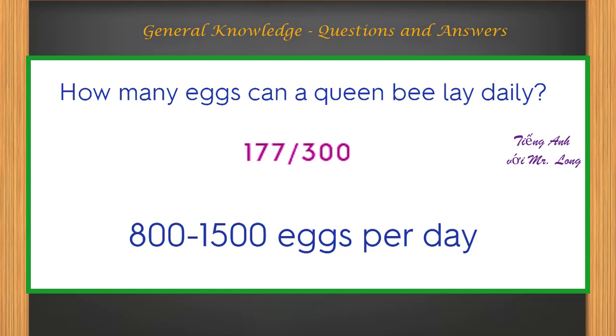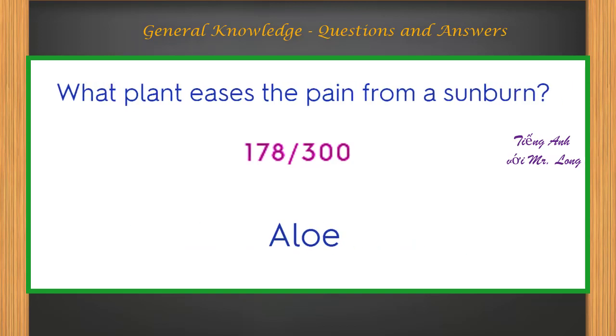How many eggs can the queen bee lay daily? 800 to 1500 eggs per day. What plant eases the pain from a sunburn? Aloe.